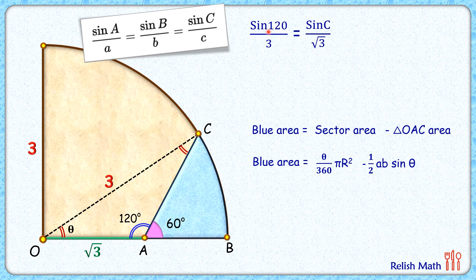Putting the value of sin 120°, which is √3/2, and simplifying, we get sin C value as 1/2. We know that sin 30° is also 1/2. So sin C = sin 30°, and angle C is 30 degrees.